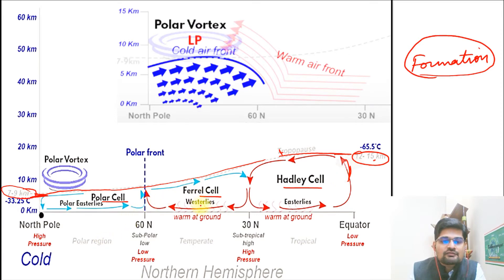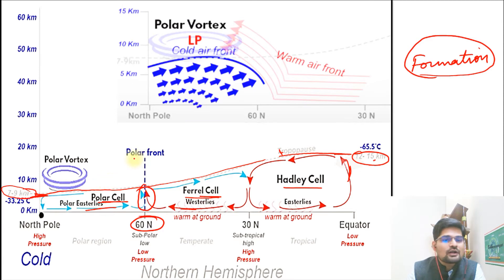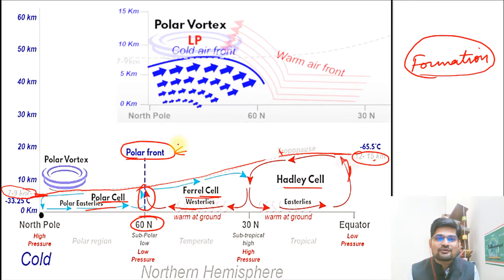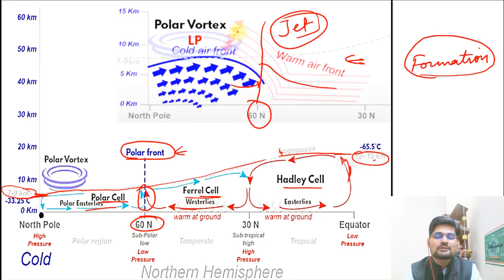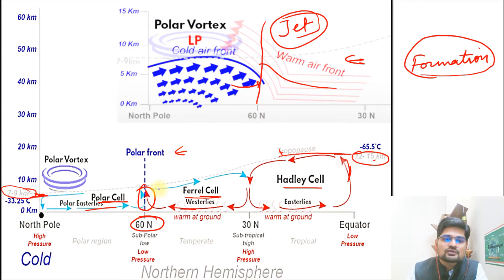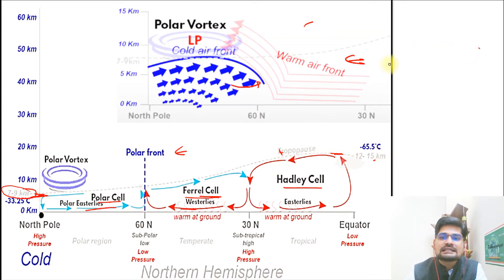The air from the Ferrel cell and the polar cell — the easterlies and westerlies — meet at this junction at 60 degrees north. This is called the polar front, and the polar front jet stream is created here because of the mixing of warm and cold air. So there is a warm air front and a cold air front meeting at 60 degrees north where this jet stream is formed — that is called the polar front jet stream. If you haven't watched the video on jet streams, please go to the playlist to clarify this concept before continuing.